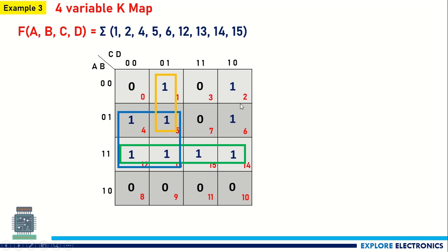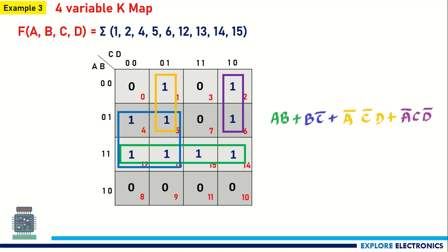We also have two more adjacent ones forming another group. Writing the individual group expressions: the green group gives A·B, the blue group gives B·C-bar, the orange group gives A-bar·C-bar·D, and the purple group gives A-bar·C·D-bar. This is how we solve four-variable K-maps by grouping.